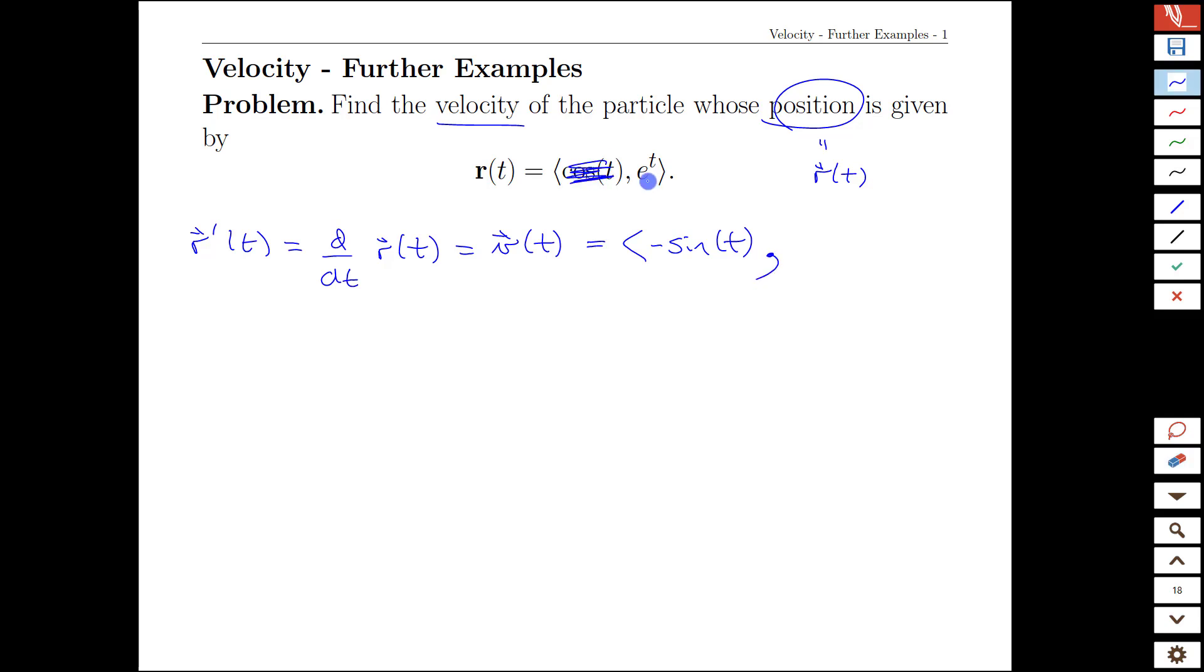We ignore the cosine completely, and we take the derivative of e to the t, and that e to the t derivative is of course just e to the t again. And that's it. Couldn't get any simpler if you have your derivative rules carefully memorized and the skill set built up there.